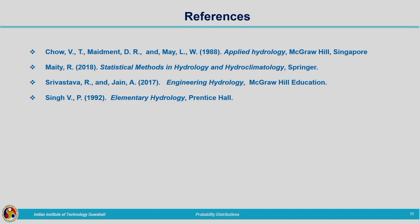These are the very commonly used distributions in hydrology for both discrete and continuous random variables. You can go through the references for more understanding. Here I am winding up this lecture. Thank you very much.